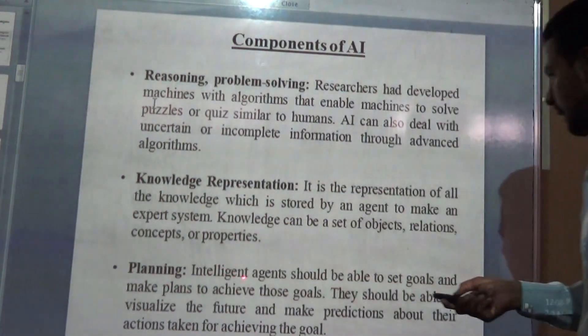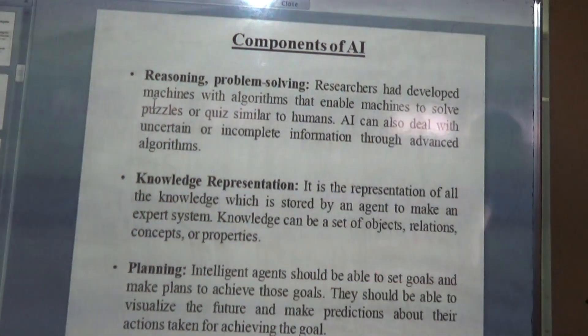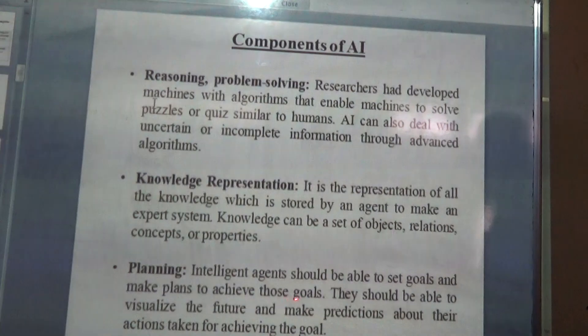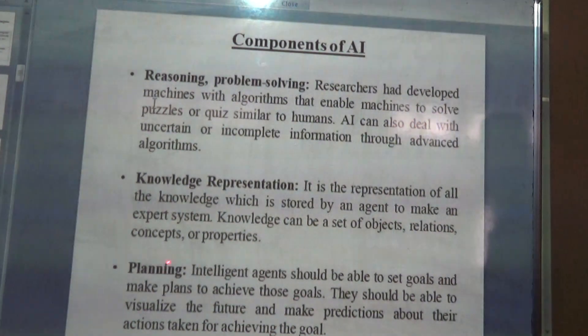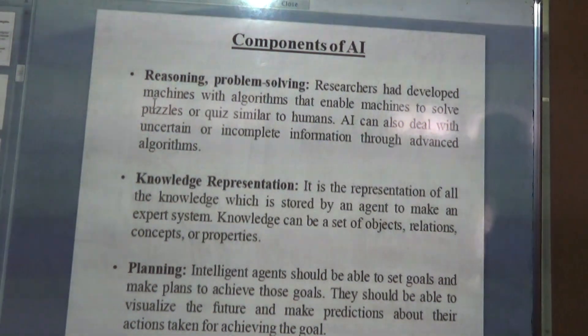Planning — an intelligent agent should be able to set goals and make plans to achieve those goals. So planning is also one component of AI.